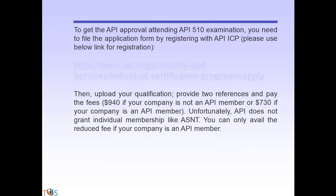To get the API approval to attend the API 510 examination, you need to file the application form by registering with API ICP. You should upload your qualifications, provide two references, and pay the fees: $940 if your company is not an API member, or $730 if your company is an API member. API does not grant individual membership, so you can only avail the reduced fee if your company is an API member.